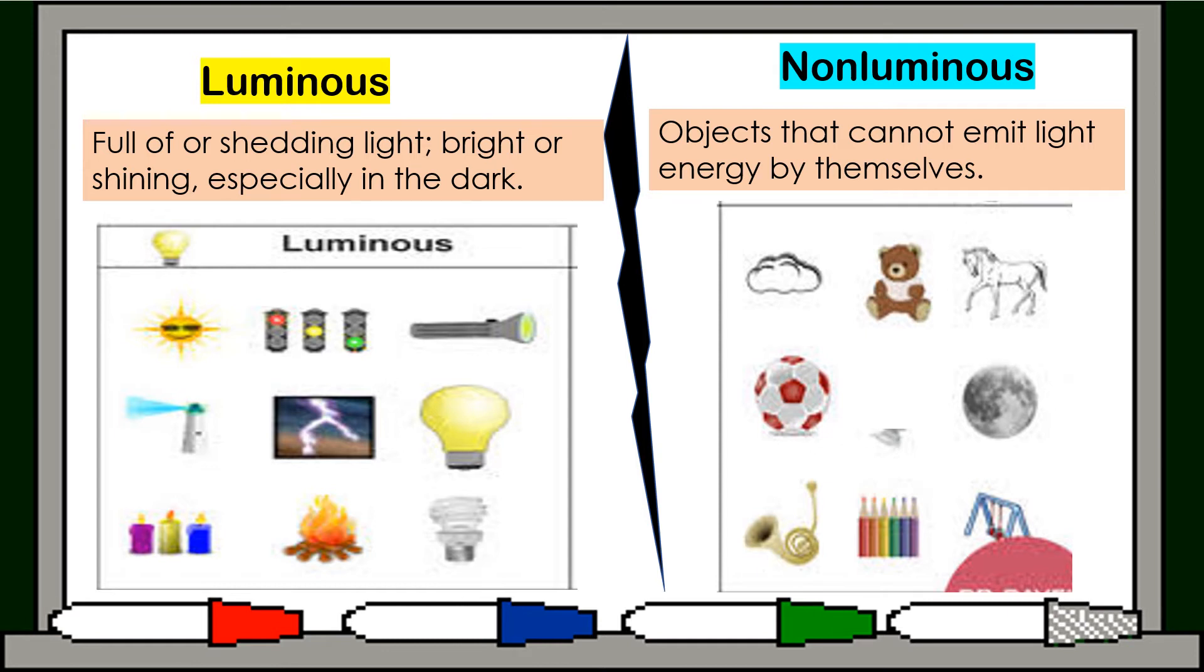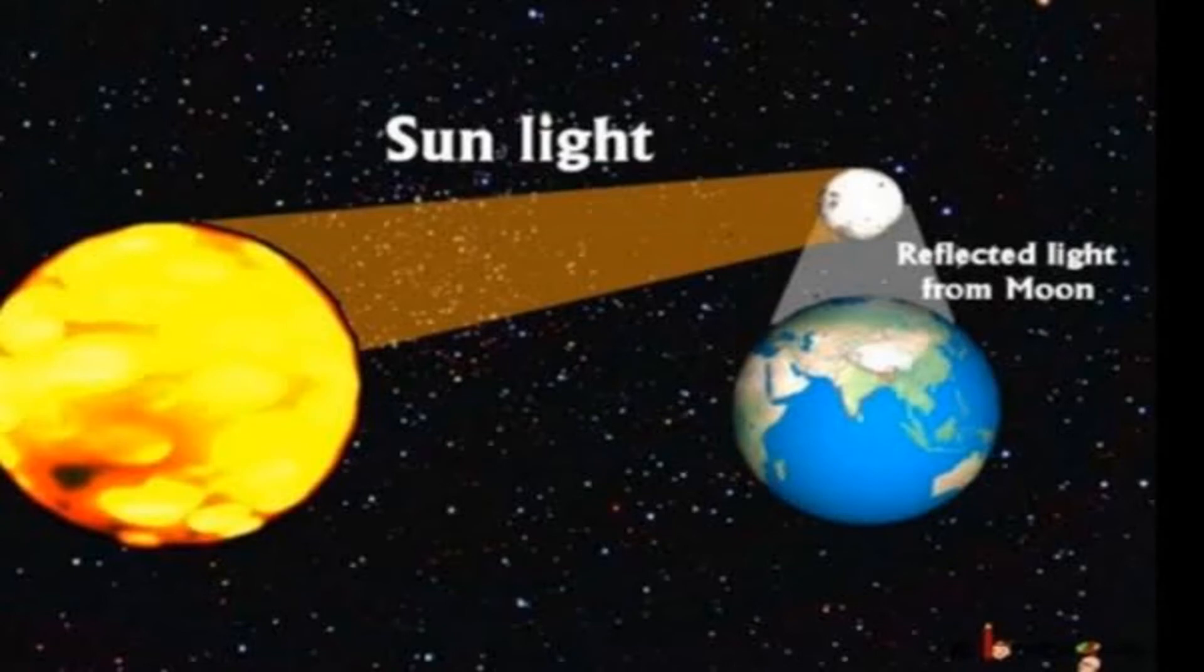When we say non-luminous, objects that cannot emit light energy by themselves. These are things that you see without light, like clouds, animals, balls. Do you know that the moon also gives light? But its light comes from the sun. So the moon is non-luminous. Non-luminous objects do not give off light of their own. They reflect light from a luminous source. The moon gets light from the sun, so it reflects the light of the sun.